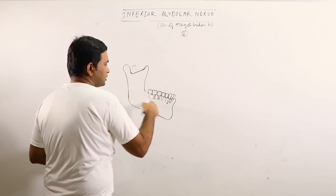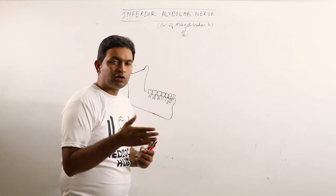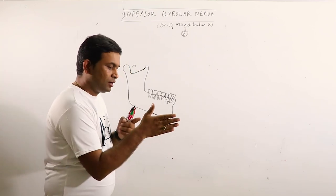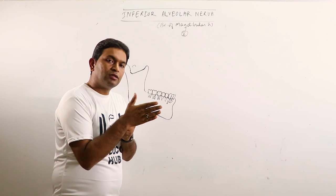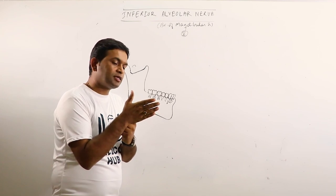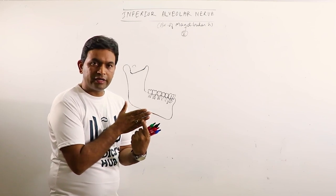Now, this is the lateral surface of the mandible. We will observe the course of the inferior alveolar nerve. The mandibular foramen is located on the medial surface or inner surface of the mandible, while the mental foramen is here.